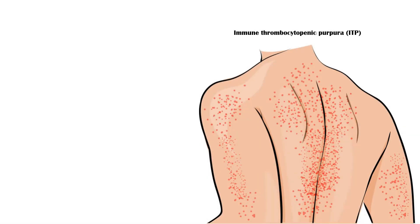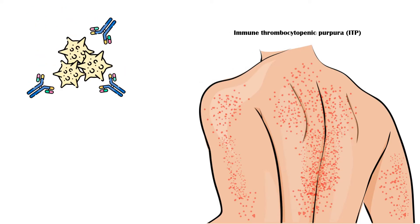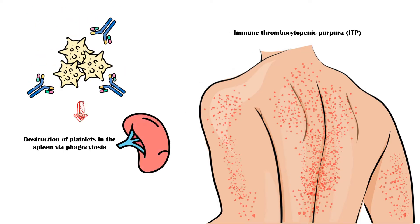Immune thrombocytopenic purpura, or ITP, is a syndrome characterized by formation of autoantibodies against a person's own platelets, leading to their destruction in the spleen via phagocytosis, which ultimately results in reduced numbers of platelets in the circulation and subsequent clinical manifestations.